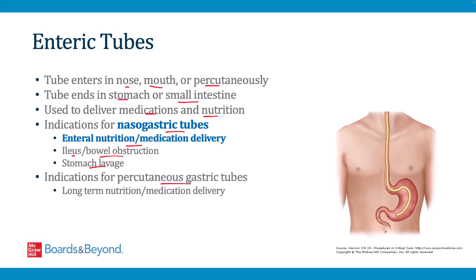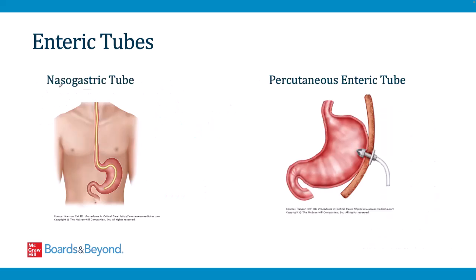Percutaneous gastric tubes are placed when patients need long-term nutrition or medication delivery, typically when dysphagia or inability to swallow is not expected to improve quickly. Nasogastric tubes are placed at the bedside by nurses or internal medicine providers. Percutaneous enteric tubes — sometimes called PEG tubes (percutaneous endoscopic gastrostomy) — are placed by a catheter through the skin into the stomach and can be placed by GI doctors, surgeons, or interventional radiologists.